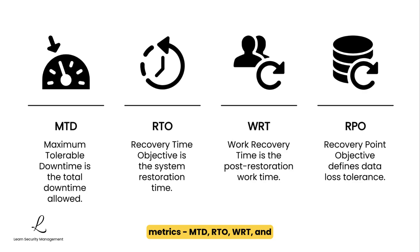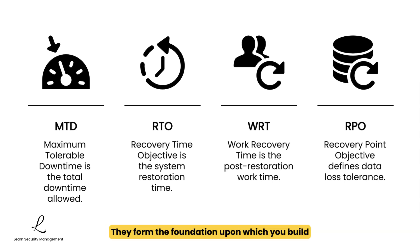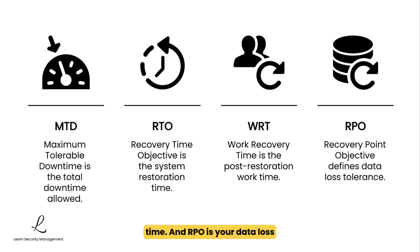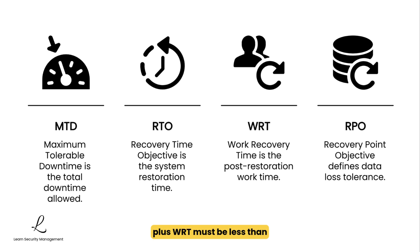Understanding these four metrics — MTD, RTO, WRT, and RPO — is fundamental to creating effective disaster recovery and business continuity plans. They form the foundation upon which you will build your technical recovery strategies. Remember: MTD is your absolute limit for downtime, RTO is your system restoration time, WRT is your post-restoration work time, and RPO is your data loss tolerance. And most importantly, RTO plus WRT must be less than Maximum Tolerable Downtime.